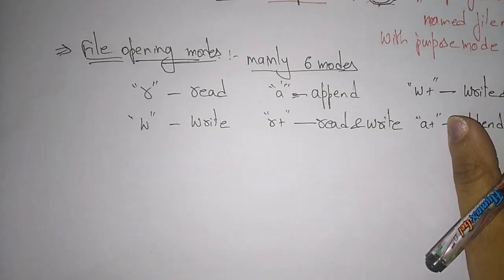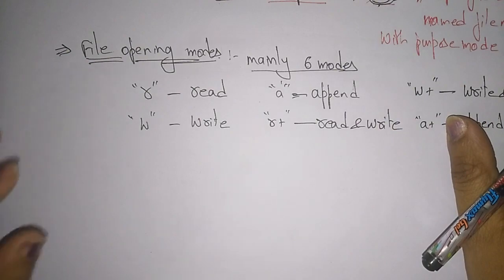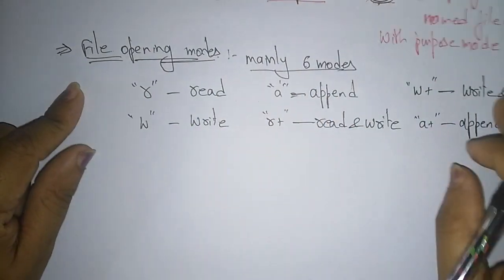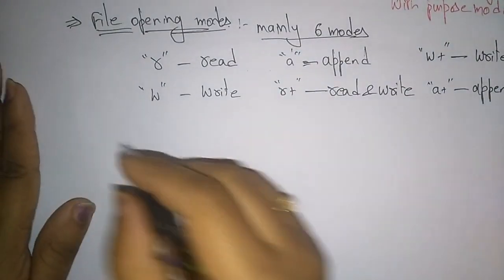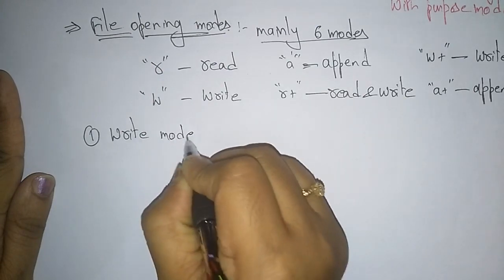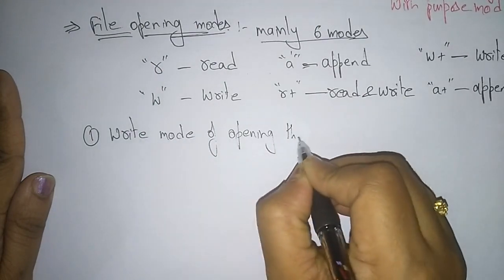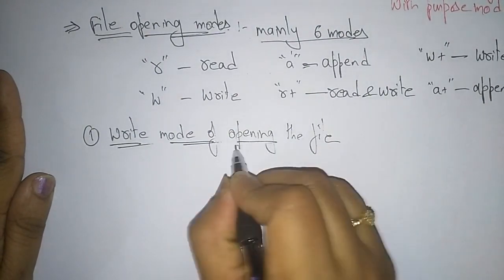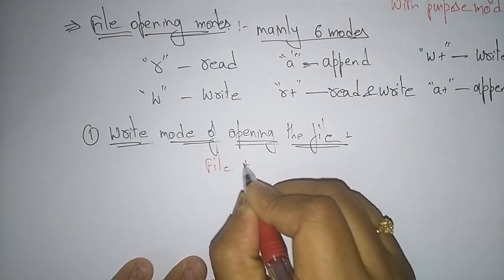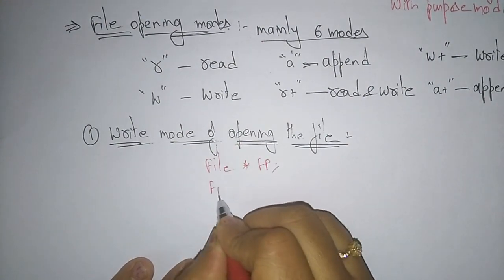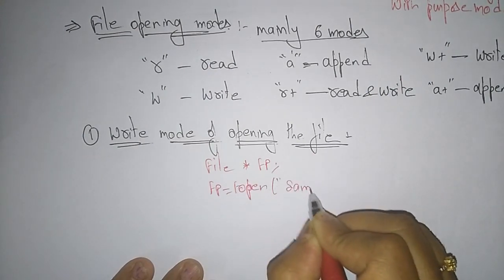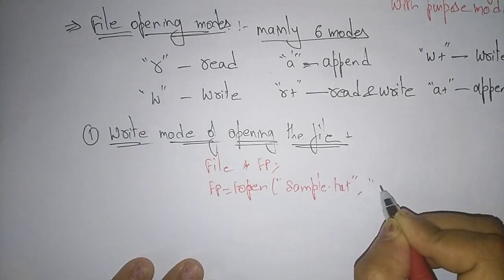Let us continue with the file concept. In the previous video I explained about the file opening modes — mainly divided into six: read, write, append, read and write, write and read, and append and read. Now let us see the write mode of opening the file. First, you have to declare the file pointer: FILE *fp, and then open the file using fopen with filename sample.txt.